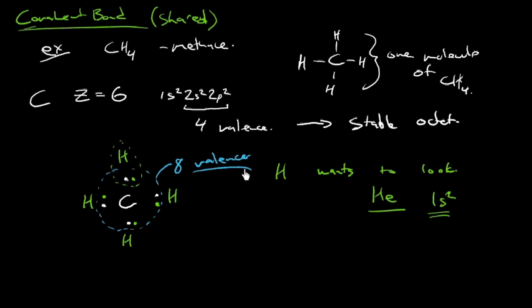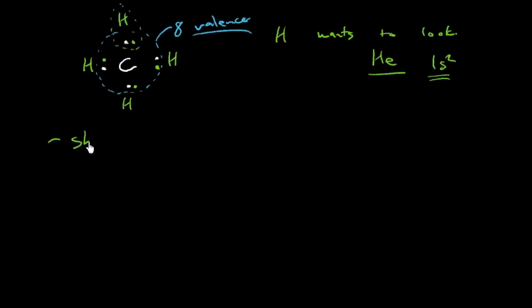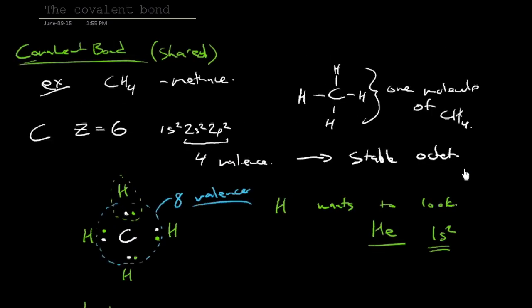So the covalent bond involves sharing of electrons. And it's also between specific atoms. There's a term that sometimes we use here, and that term is directional. That is, if we go to this model here, there's a direction to it. This hydrogen and this carbon, specifically, are involved in the bond.